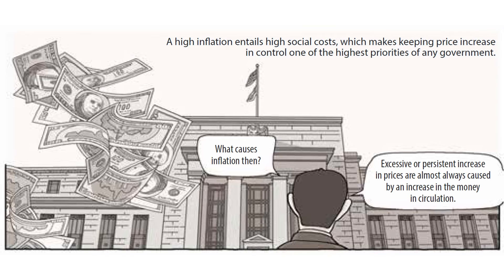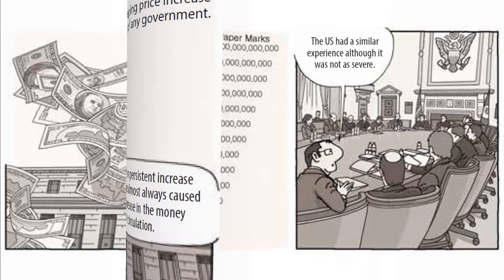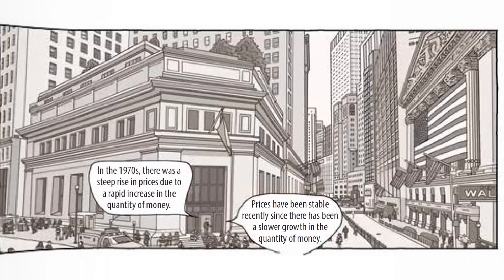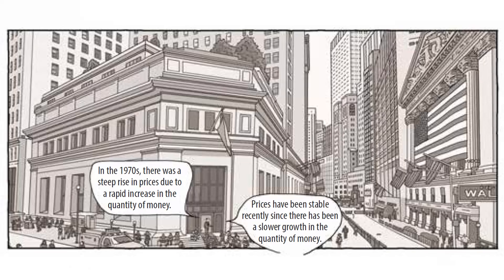In the early 1920s, prices in Germany rose three times per month — and so did the quantity of money in circulation. The U.S. had a similar experience, though not as severe. In the 1970s, there was a steep rise in prices due to a rapid increase in the quantity of money.